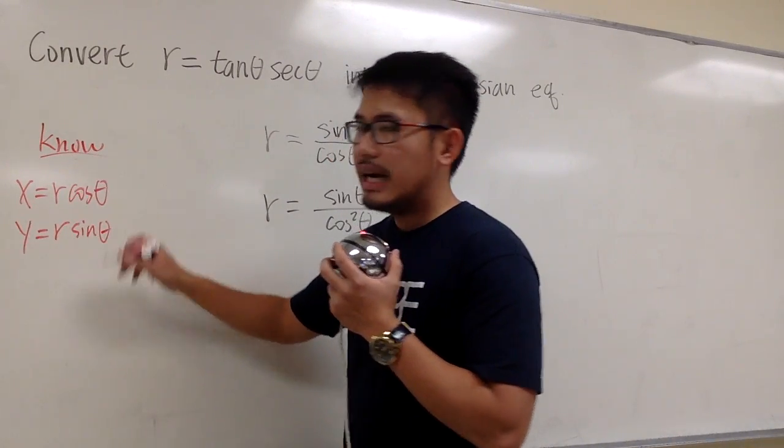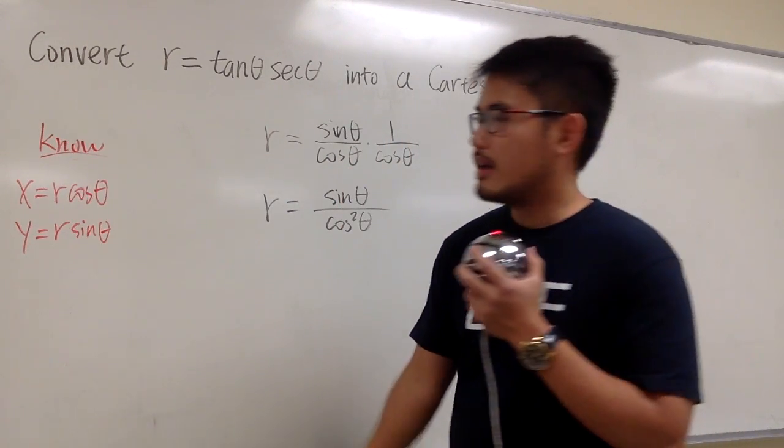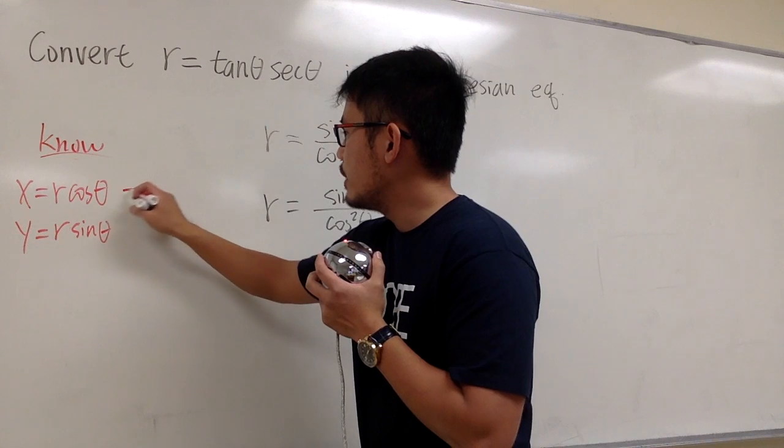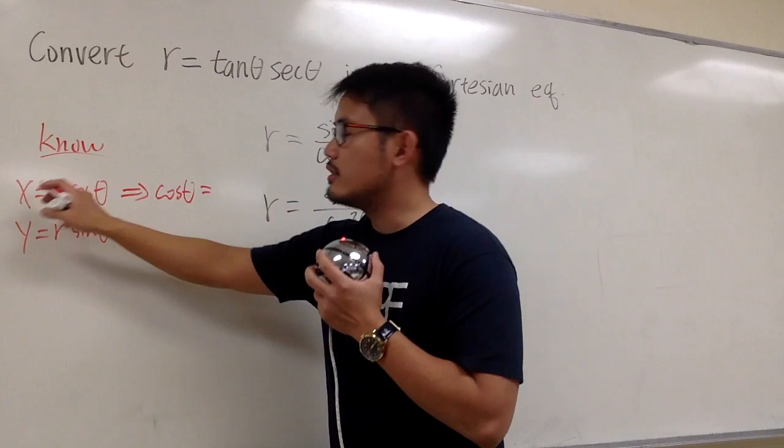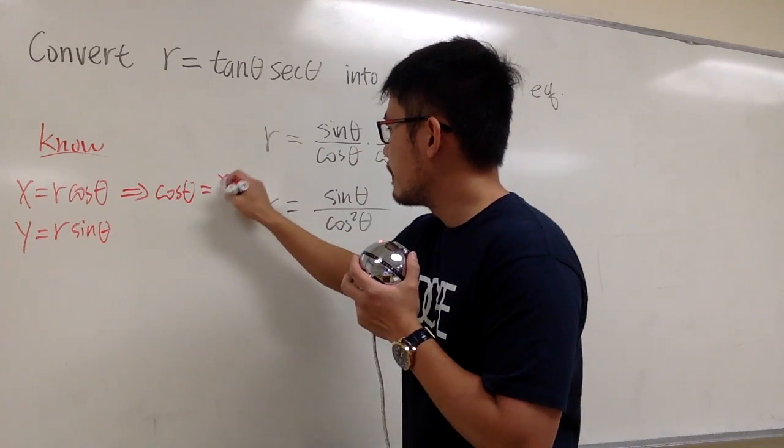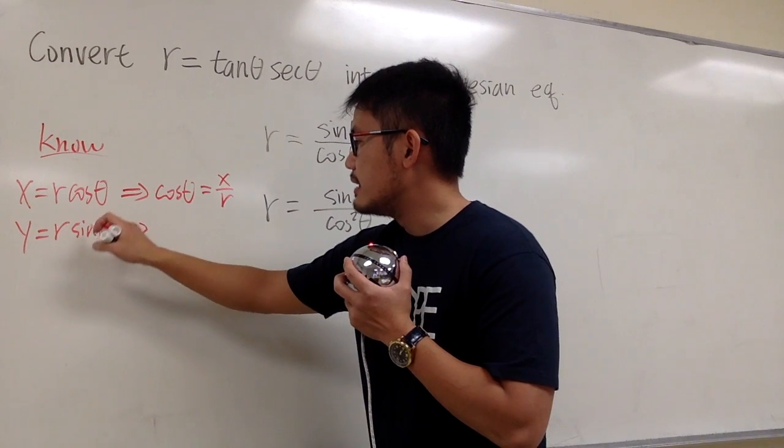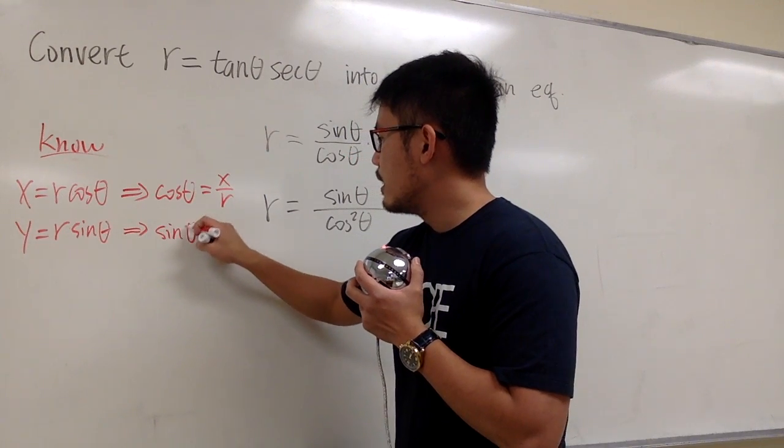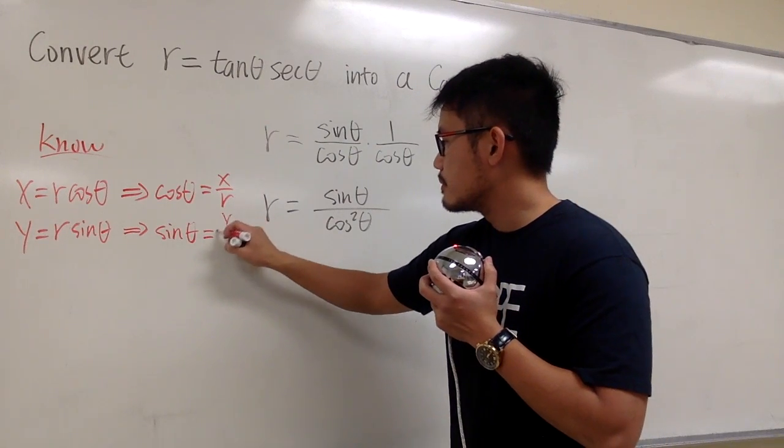And this is perhaps the way that you guys would like better. Let's look at this and try to isolate cosine theta and sine theta. So for the first equation, we are looking at this as cosine theta is equal to x over r. And then for the second equation, we can look at that as sine theta equals y over r.